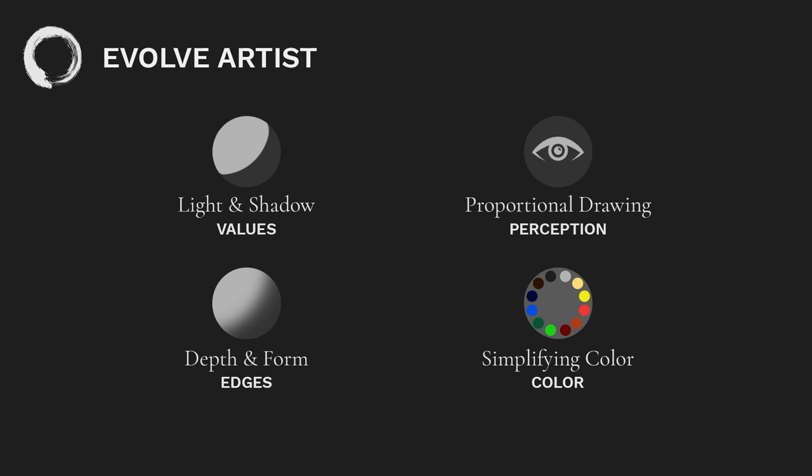This charcoal drawing is made up of only two things: values and edges. If you have a solid understanding of values and edges, you can create incredible realistic art. My name is Daniel Fulta with Evolve Artist, and we show people the path to making realistic paintings. In this video, we will be talking about the second fundamental, which is edges.